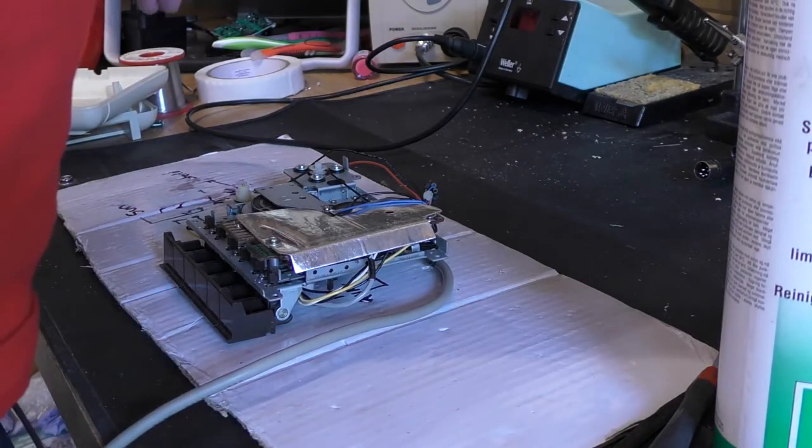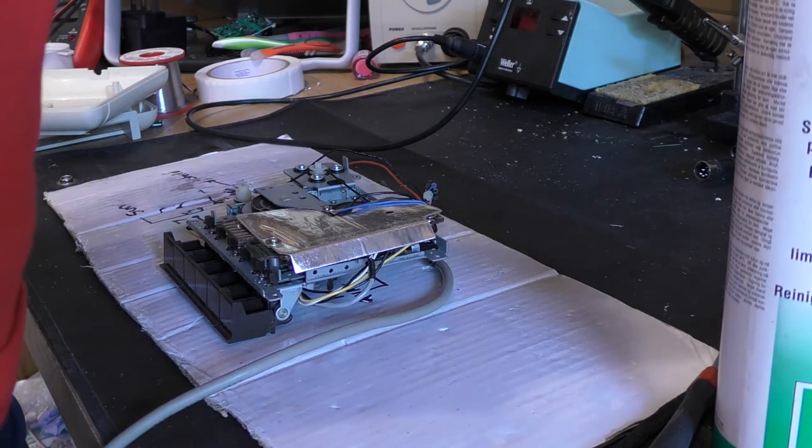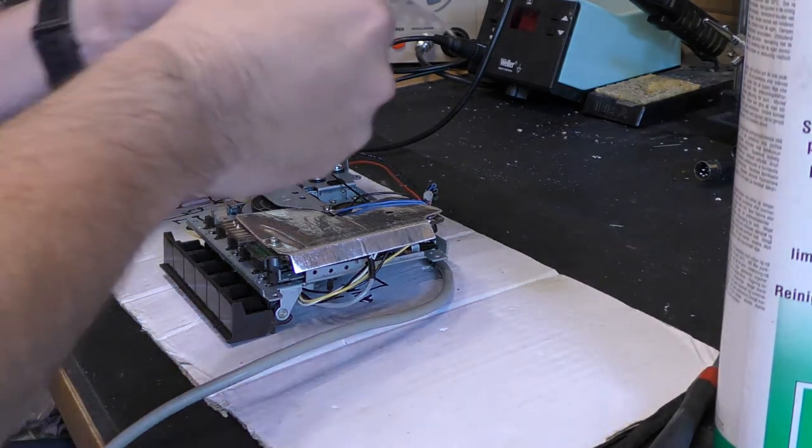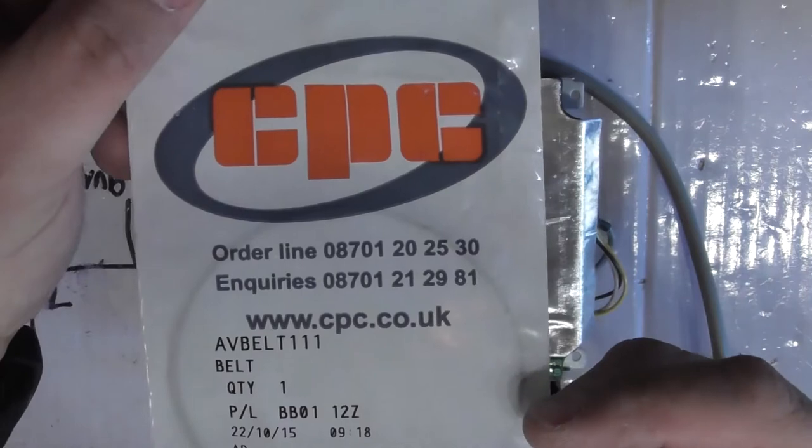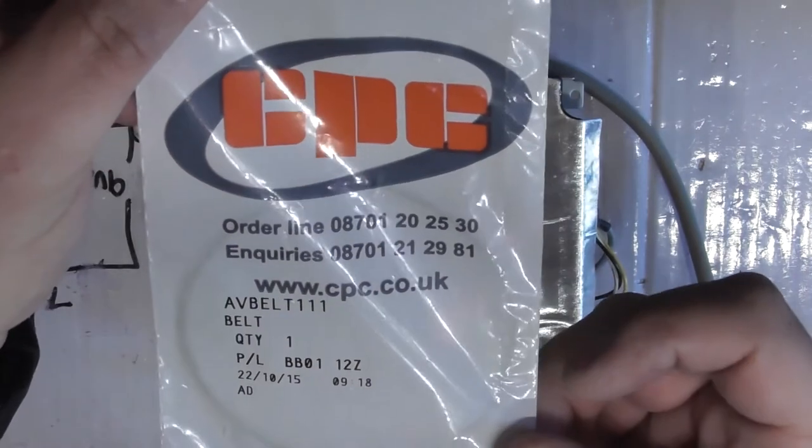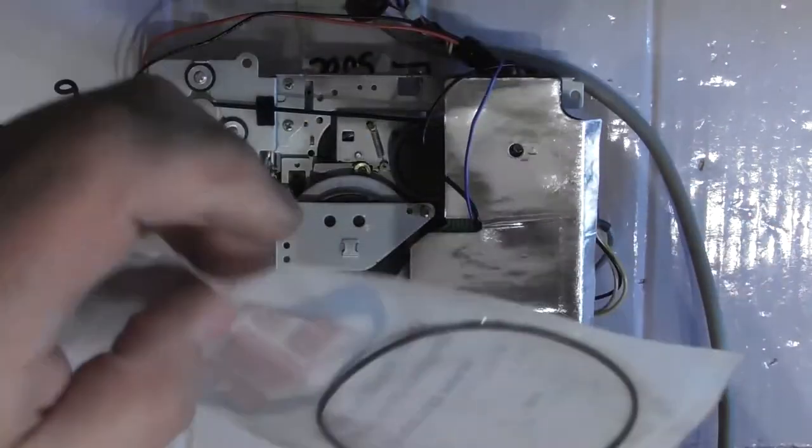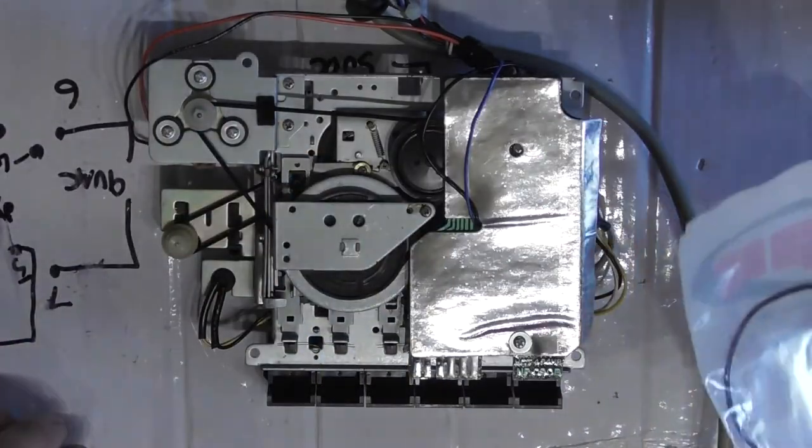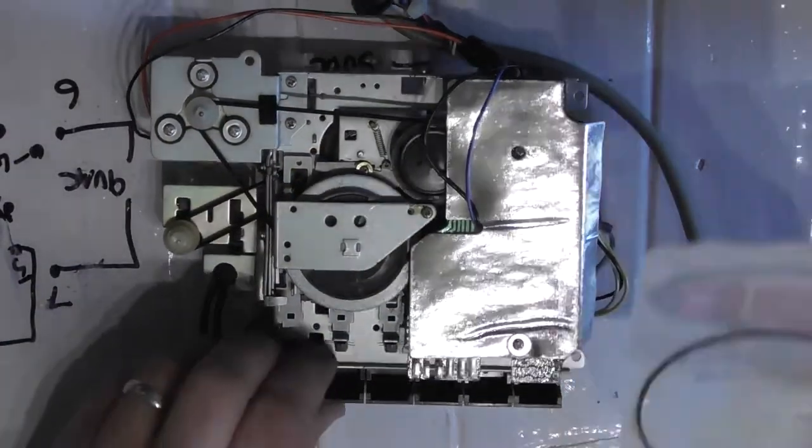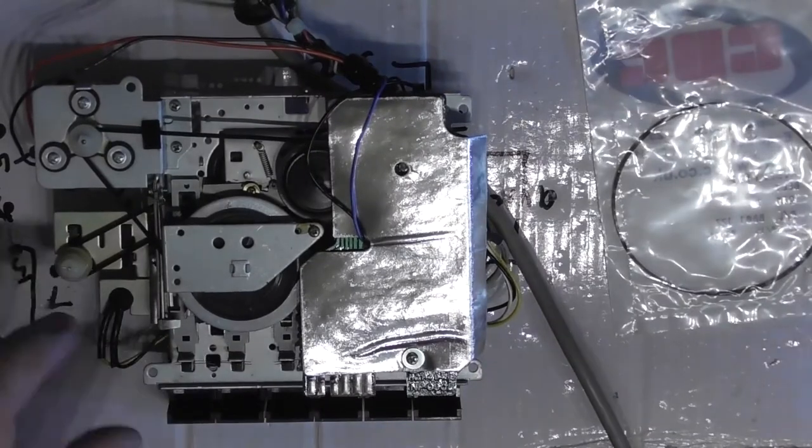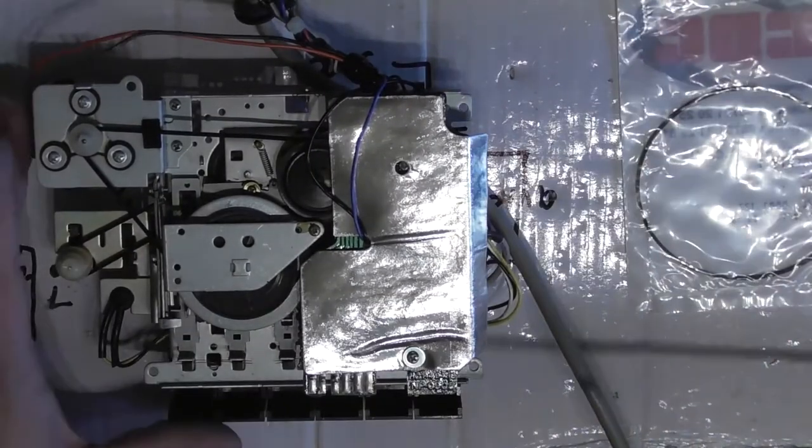So in order to do that, we're just going to replace the belt. I'm going to grab one of these. Now these belts are available from a company in the UK called CPC. There's the belt number I use, AV Belt 111. I'll stick that on the bottom. You'll see it on the bottom of the video as well. They don't cost much. Don't go to someone like Maplin's because they charge about 15 quid for a belt. It's ridiculous. They don't cost very much. You can buy them direct from CPC.